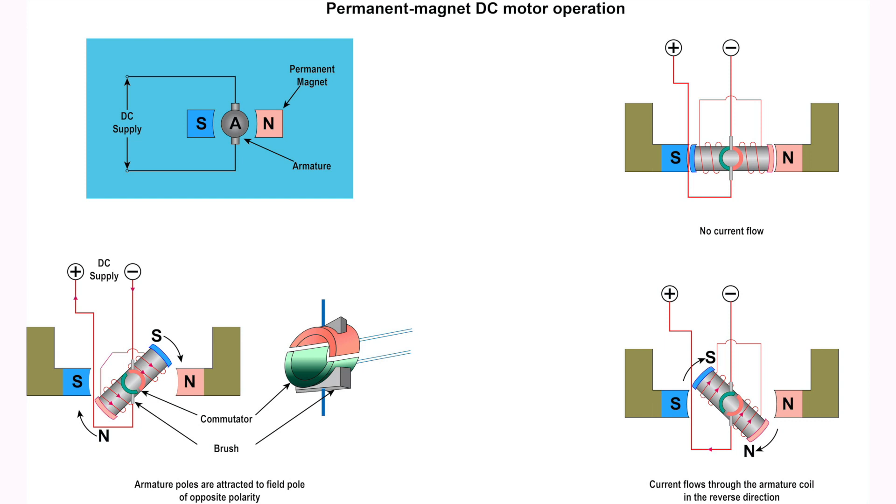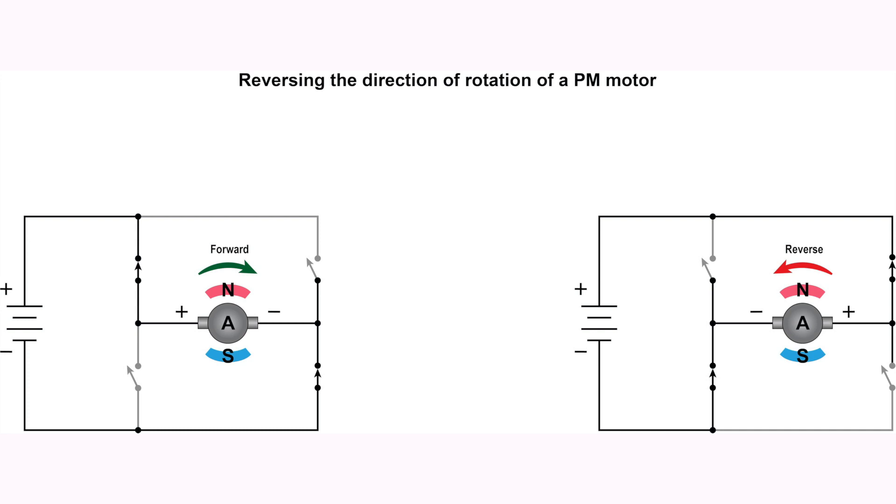The armature is placed inside the magnetic field of the permanent magnet and rotates in the direction of the generated force. The direction of rotation of these motors is determined by the direction of the current flow through the armature. Reversing the polarity of the voltage applied to the armature will reverse the direction of rotation.